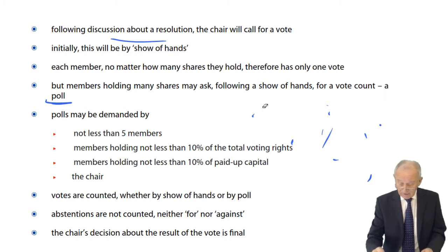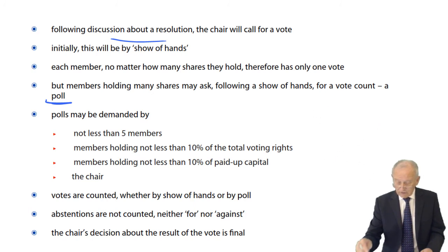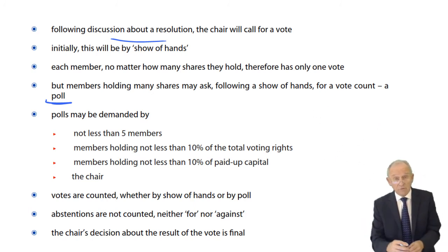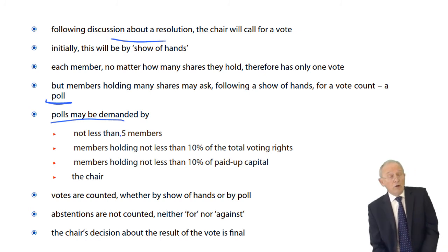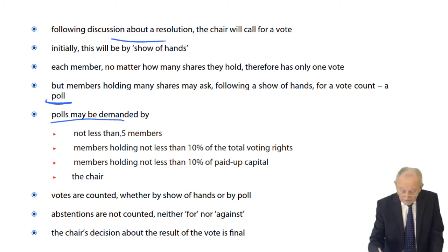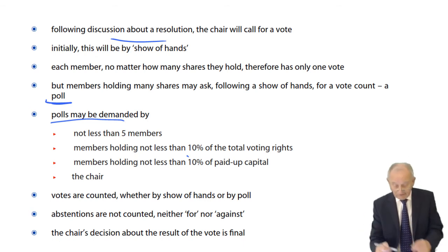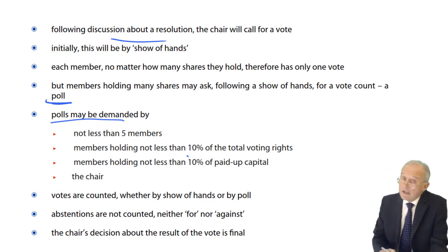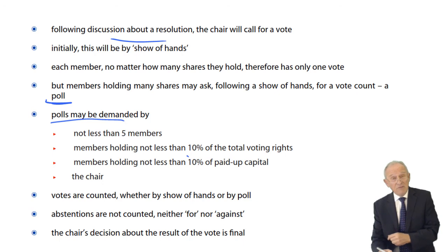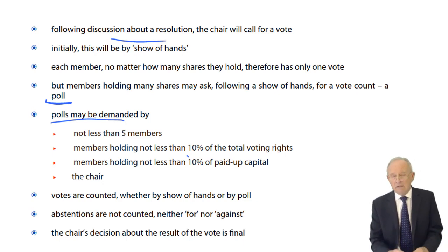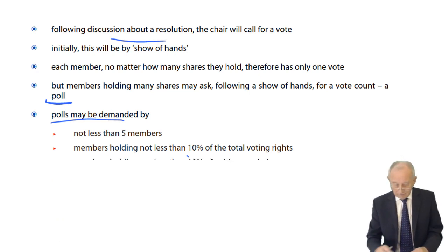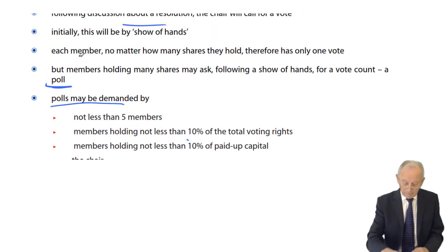The chair will likely agree to a poll. Polls may be demanded by not fewer than five members, members holding not less than 10% of voting rights, members holding not less than 10% of paid-up capital (which may not carry voting rights, such as preference shares), or the chair himself may call for a poll and commence the proceedings for a vote count.